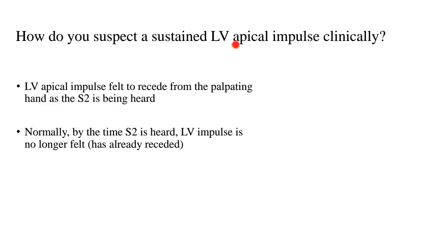How do you suspect a sustained LV apical impulse clinically? When you have a hyperkinetic impulse it is quite obvious — you can make out when the palpating finger is lifting off the chest wall because the apex is volume overloaded. However, distinguishing whether an apex is normal or sustained becomes a bit of a conundrum. What you can do is place one hand on the apex to feel the apical impulse and use another hand to hold the stethoscope to hear the heart sounds — for example on the aortic or pulmonary area. When the LV apical impulse is felt to recede from the palpating hand as S2 is being heard, that's when you think of a sustained LV apical impulse.